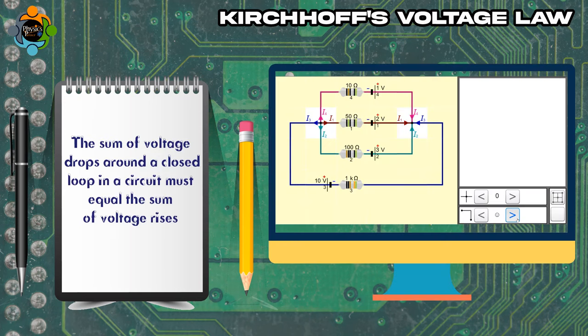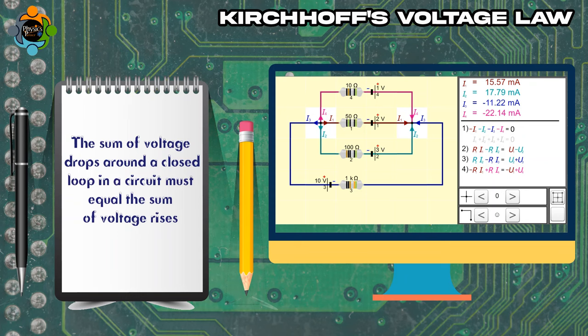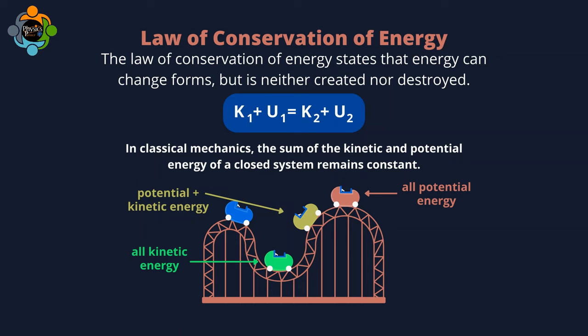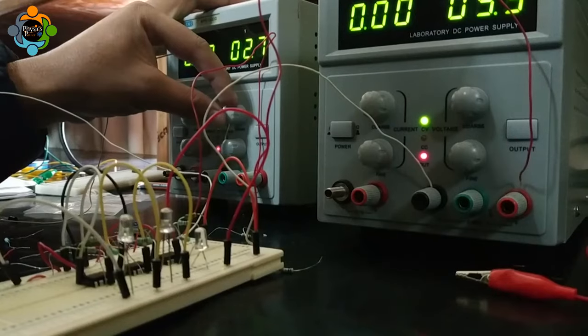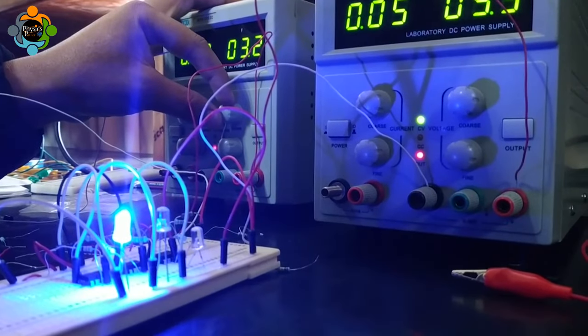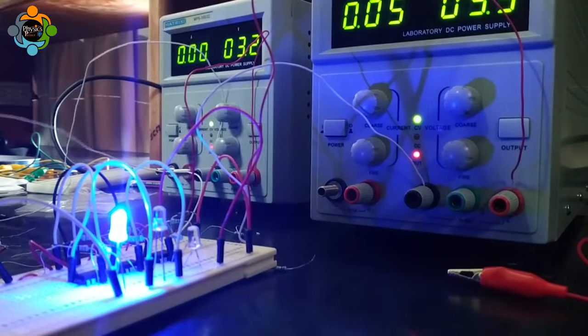Similarly, Kirchhoff's voltage law asserts that the sum of voltage drops around a closed loop in a circuit must equal the sum of voltage rises. This law is derived from the conservation of energy and is crucial for determining voltages and currents in circuit elements.